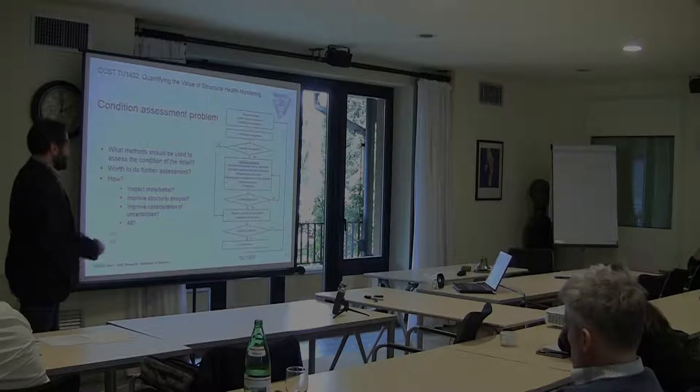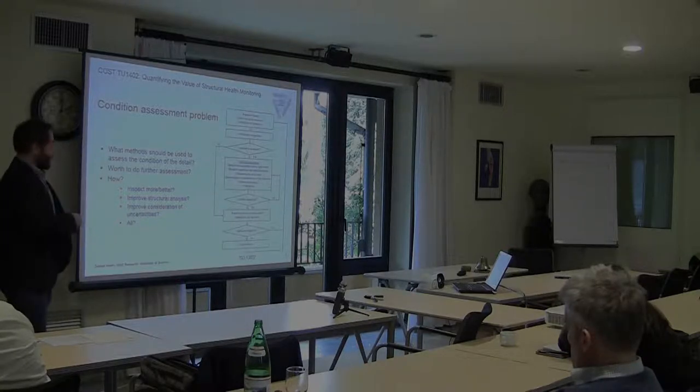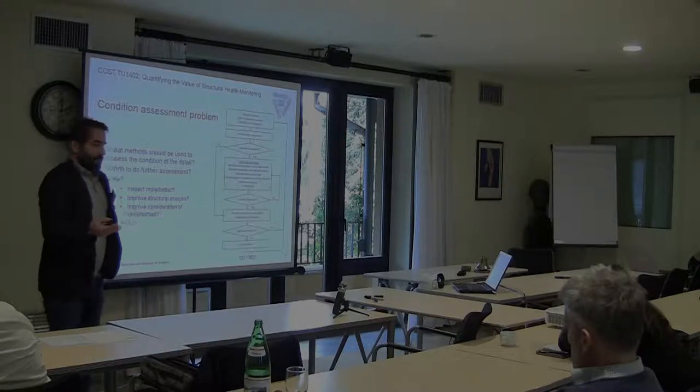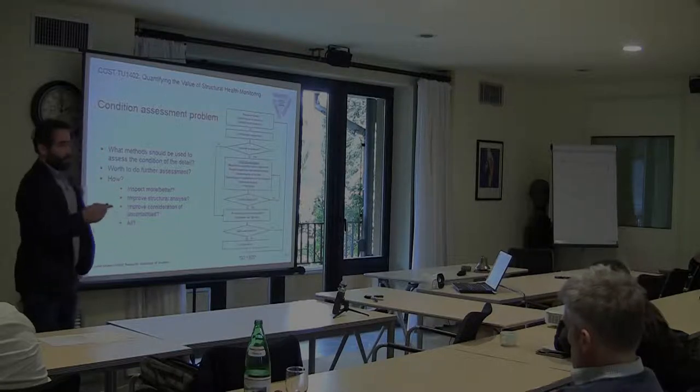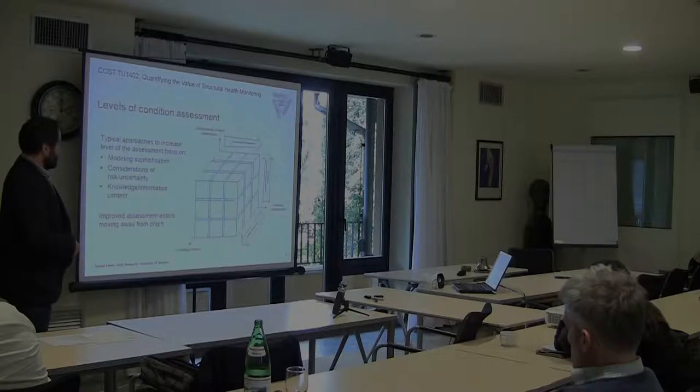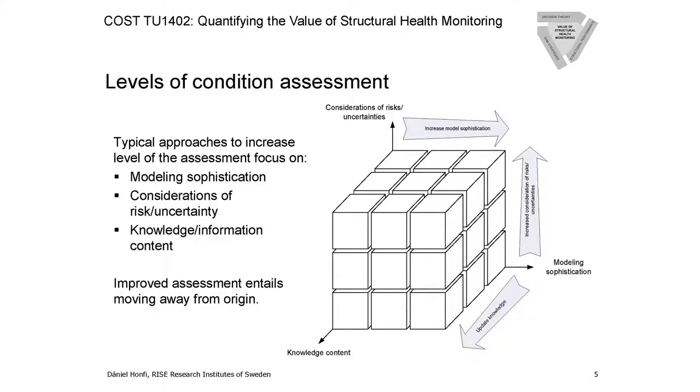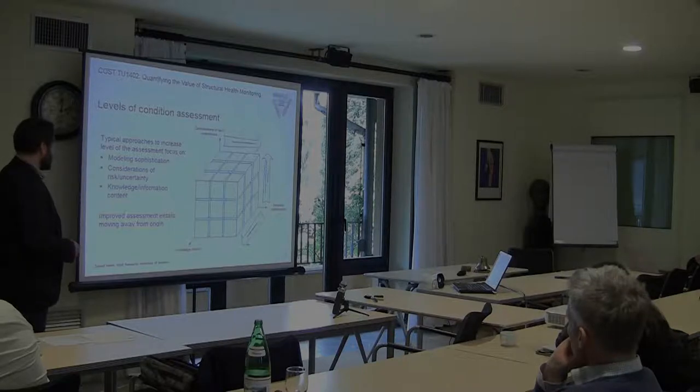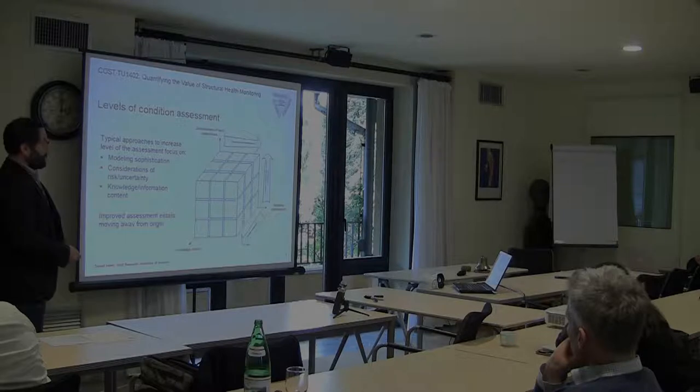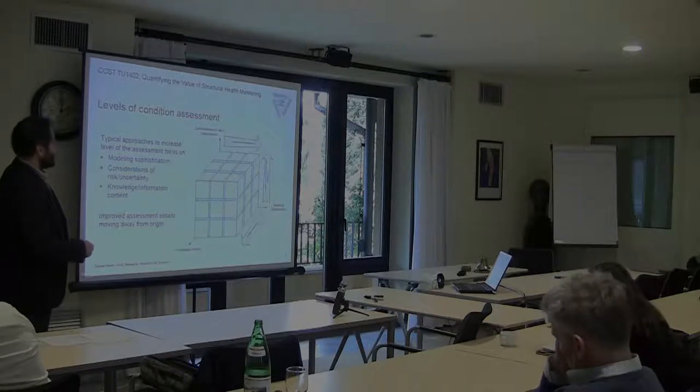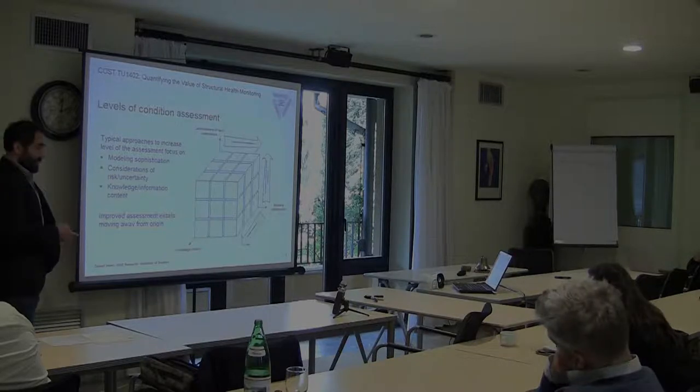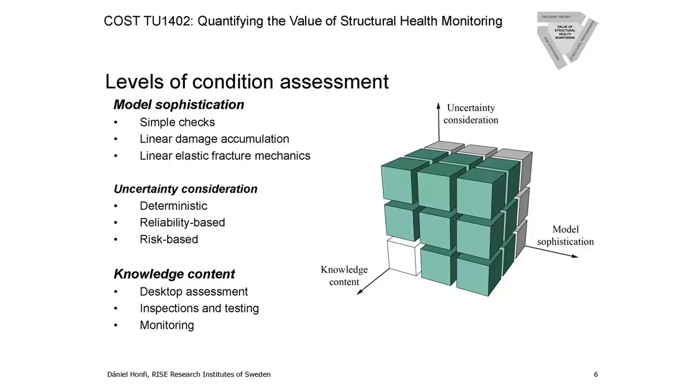That is a typical problem with condition assessment of any structures. There are these well-known flowcharts for how to do initial assessment and then decide if you need to do further inspection. We thought it's a brilliant idea to try to structure these possibilities—basically three main possibilities: focusing on having a better model, including more information by collecting data, or somehow improving the consideration of uncertainties. Here we have some examples for this case.